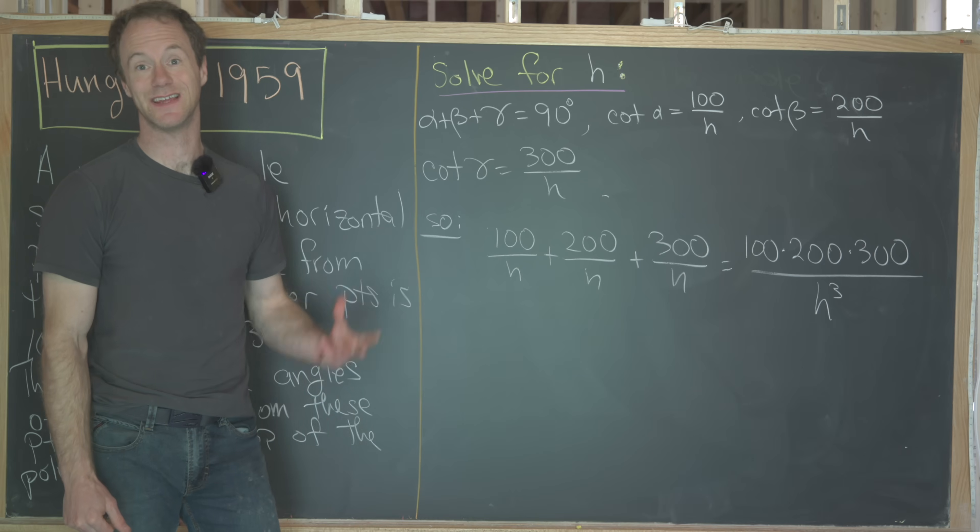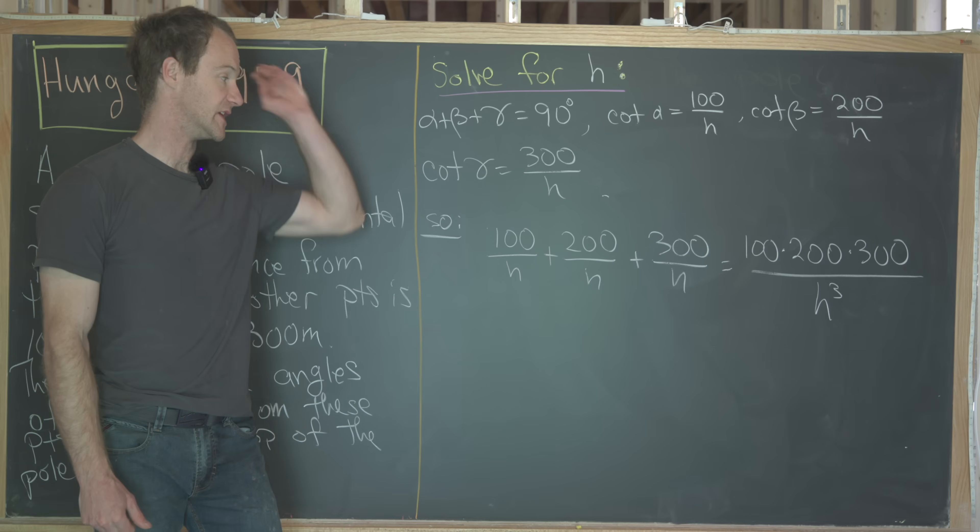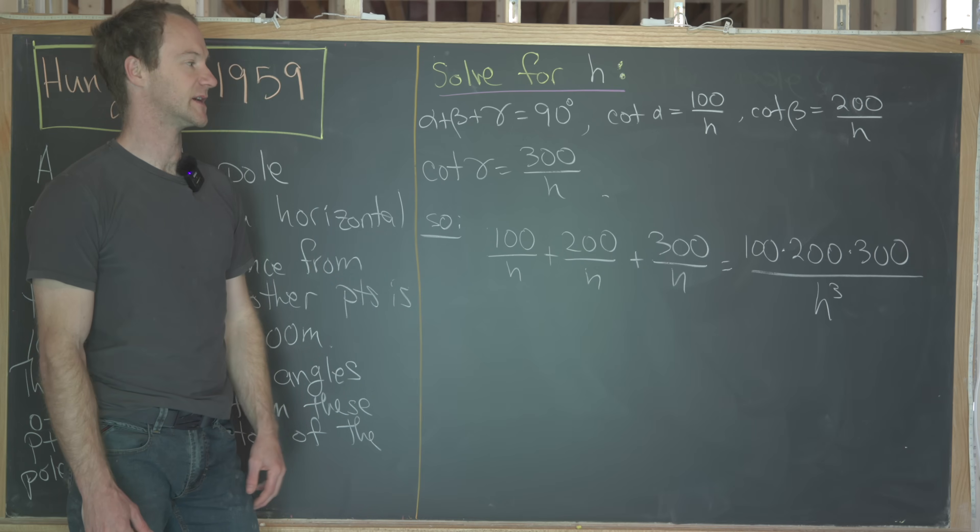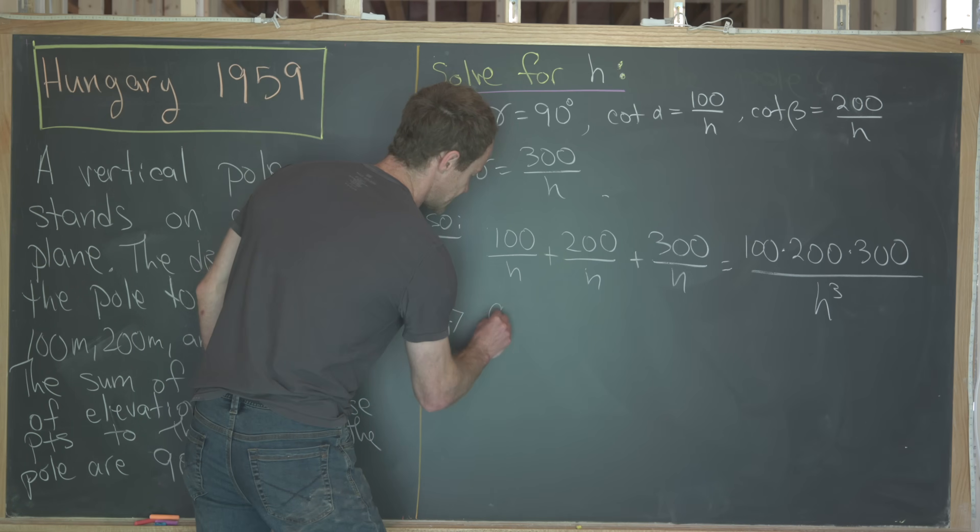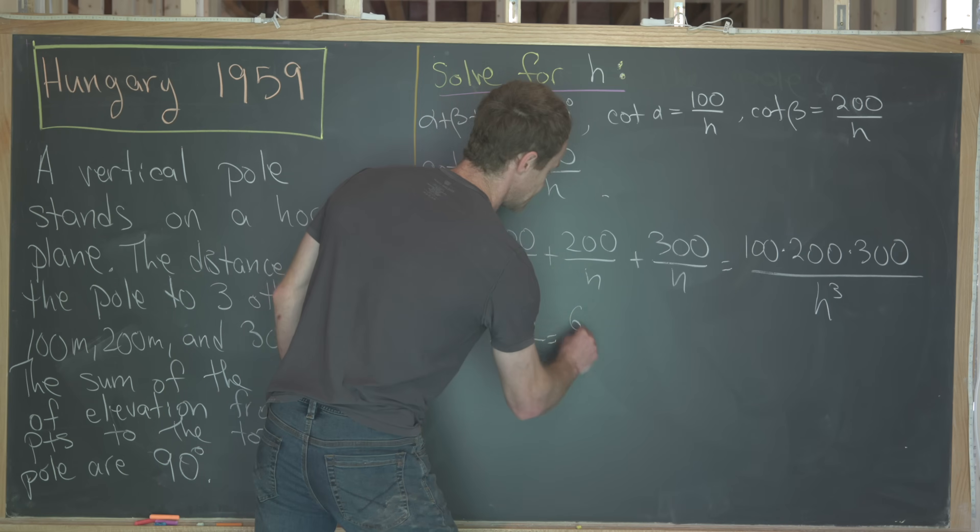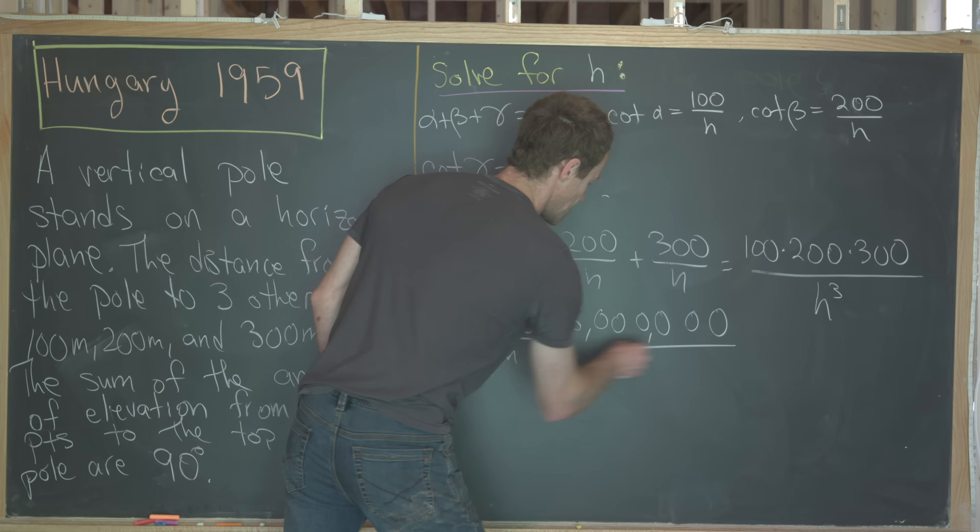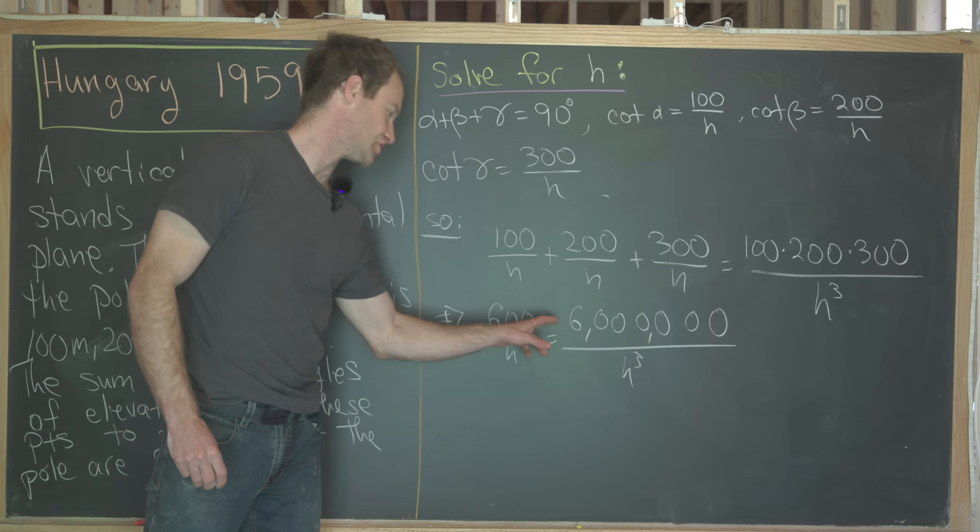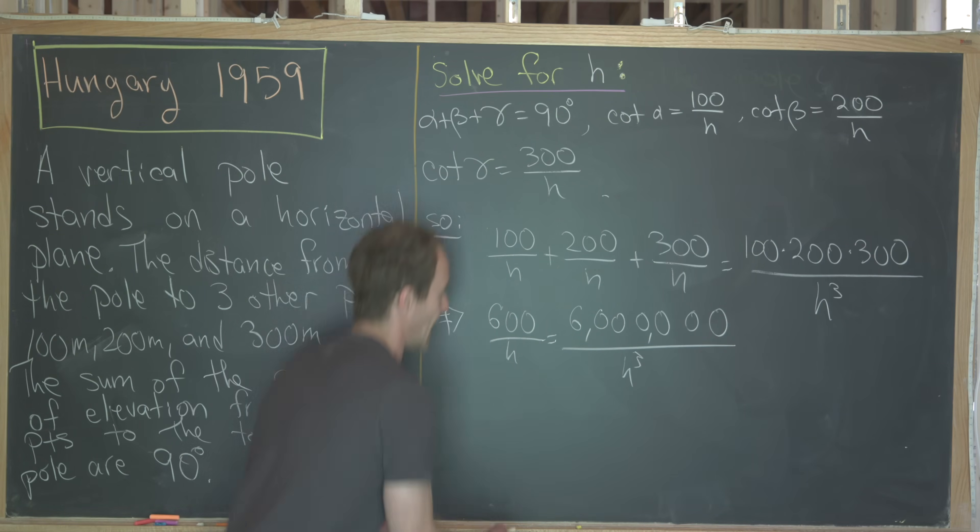Plugging in our values of cotangent into that cotangent triple angle identity gives us the following cubic equation that we can solve for h. We've got 100 over h plus 200 over h plus 300 over h equals 100 times 200 times 300 all over h cubed. So now we can simplify this pretty easily. This is going to give us 600 over h equals 6 million all over h cubed. But notice that we can cross multiply. We can bring this h cubed up here and this h over here and simultaneously divide by 600. And that's going to give us h cubed equals 10,000 h.